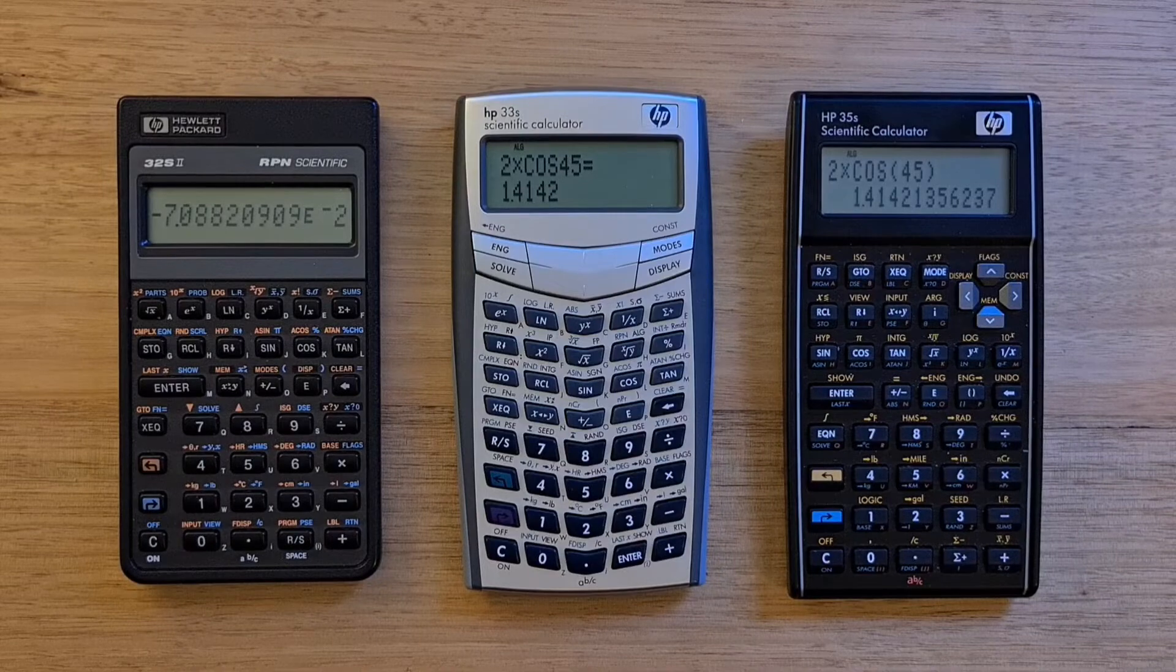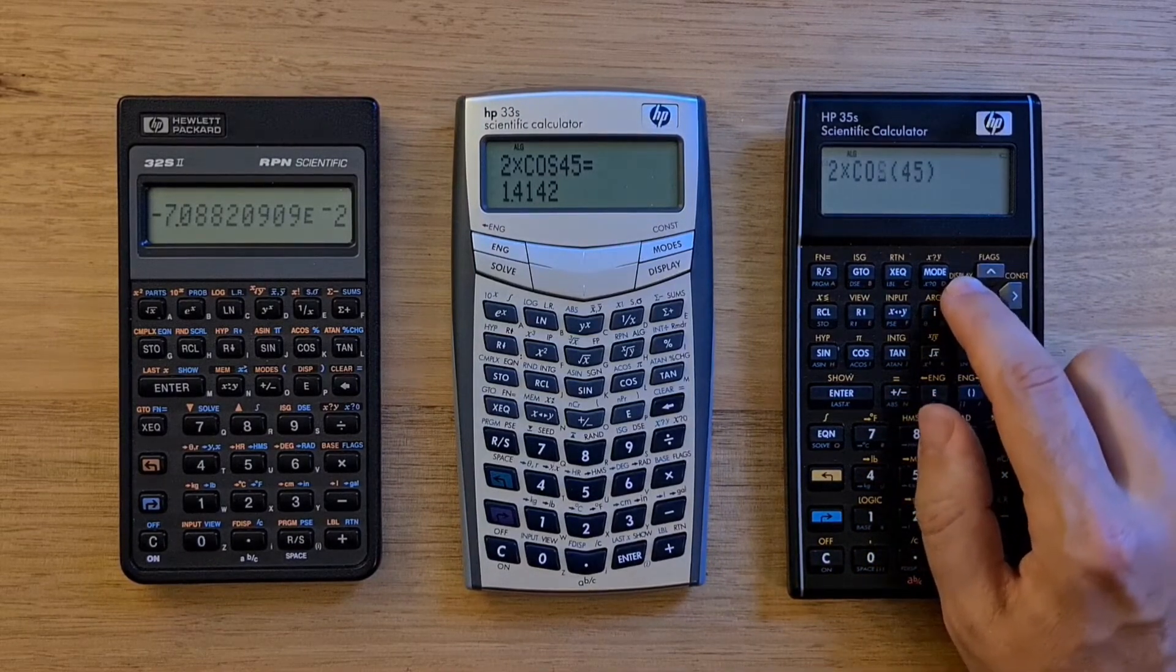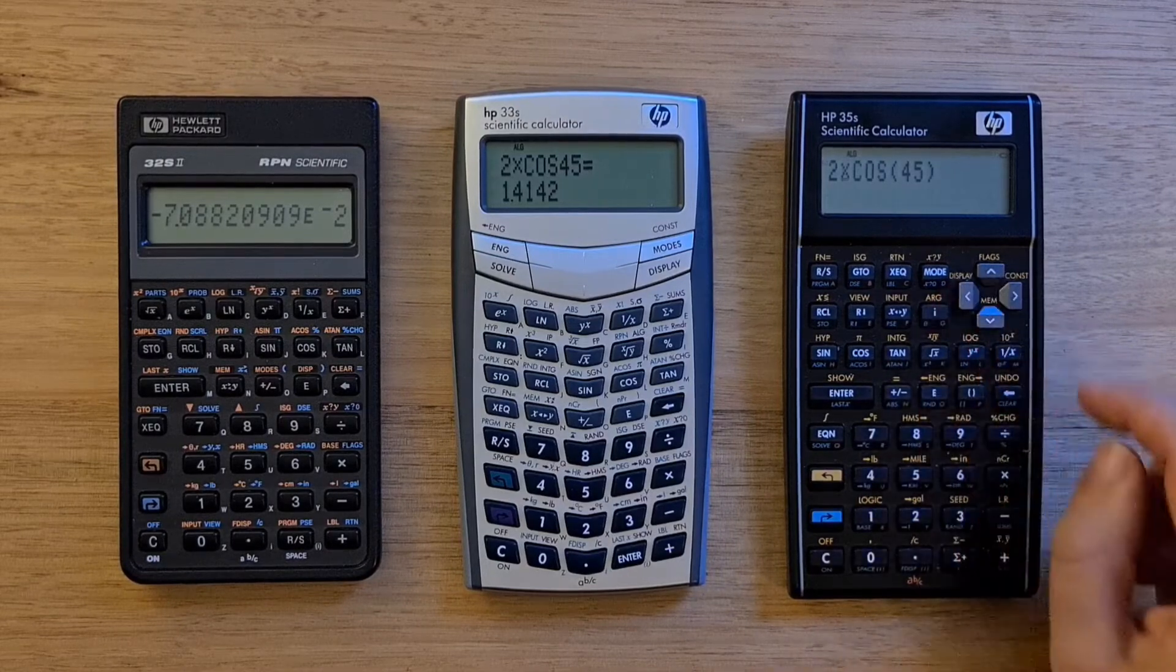On the 35S, you can hit the left arrow key to go back and edit the last equation, which is really handy.